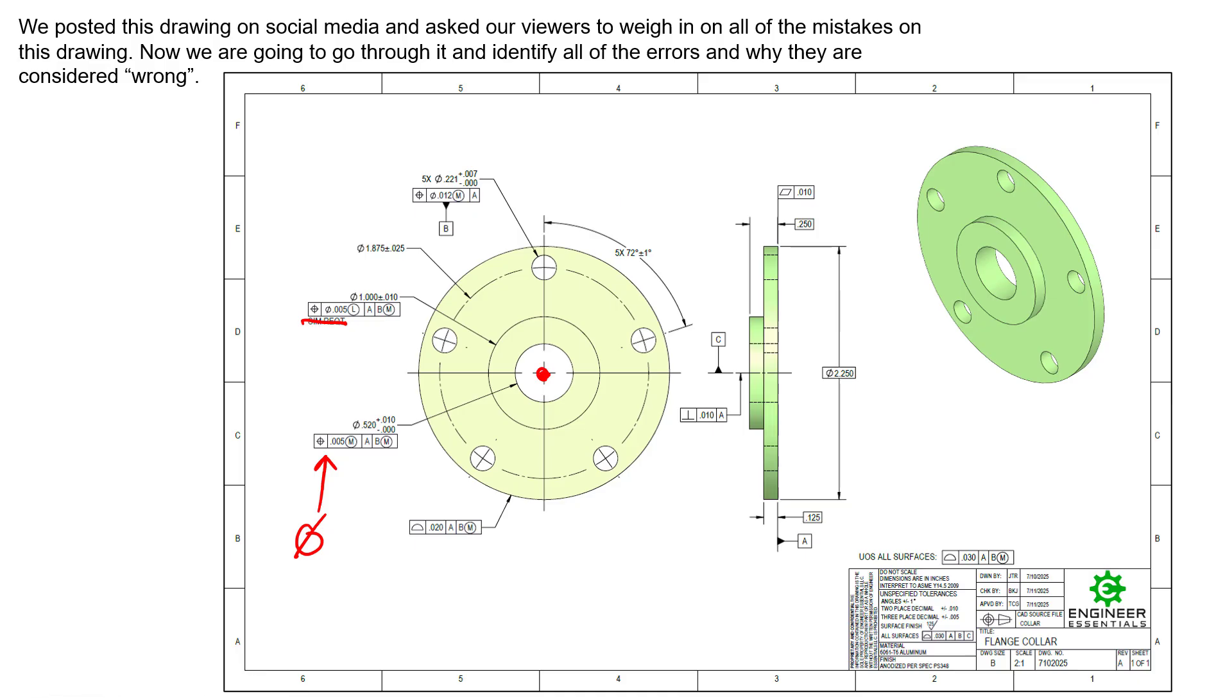The last one that we saw getting pointed out was that these two dimensions—this eighth inch and the quarter inch dimension—should be plus or minus and not basic. While the eighth inch dimension could be technically plus or minus, and so could the 0.25, those would be just size dimensions. They would not utilize datum A as the origin of that measurement because size dimensions don't get to use datums. But best practice is to use profile to locate surfaces to datums. That is exactly what we're doing here. We're having a basic dimension to identify where this surface should be, and then we rely on our UOS all surfaces profile of 30 thou to say relative to A and B this surface has a zone of plus or minus 15, or a total zone of 30.